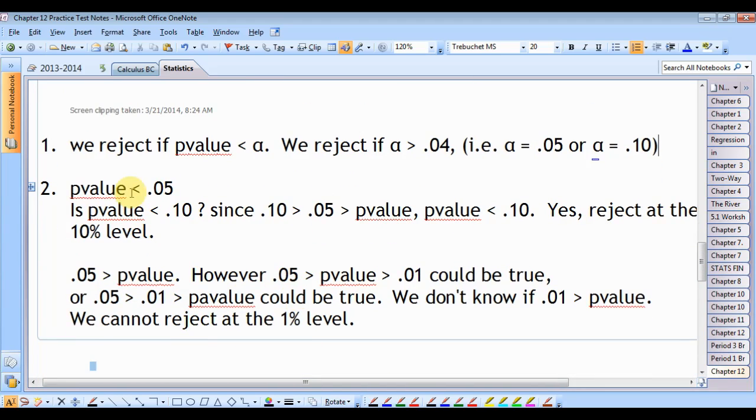So I have written here that you will reject if the p-value, well, since we're rejecting that, all we know is that the p-value is less than 0.05. Okay, so the question is, if it's below 0.05, is it also below 0.1? The answer is yes. Since 0.1 is greater than 0.05, and 0.05 is in turn greater than the p-value, that means that the p-value is less than 0.1.